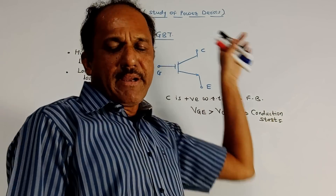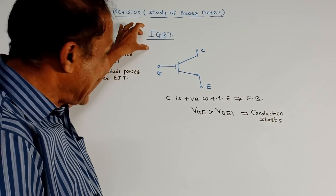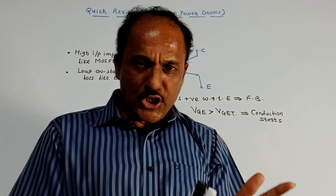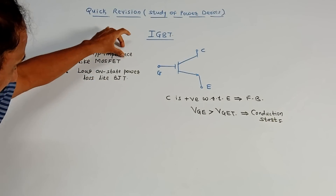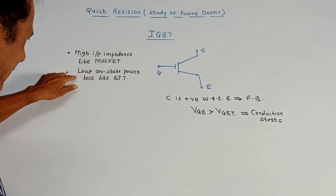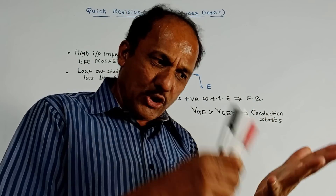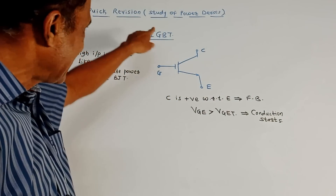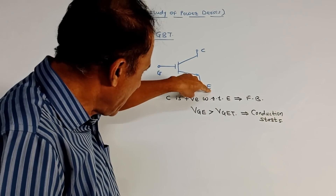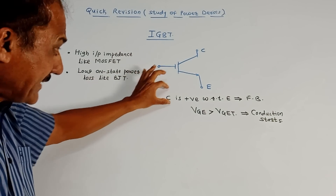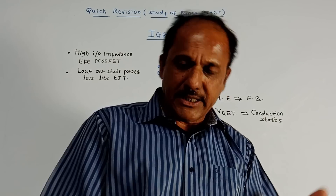The next device is the IGBT — Insulated Gate Bipolar Transistor. As the name indicates, the gate terminal is insulated, and it is basically a combination of MOSFET and BJT. It has high input impedance like the MOSFET and low on-state power loss like the BJT. Both advantages are combined in this device. The symbol has three terminals: collector terminal, emitter terminal, and gate terminal. When the collector is positive with respect to the emitter, the device is forward biased.